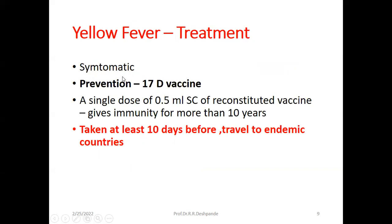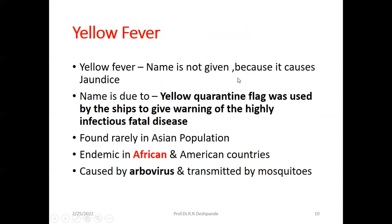Treatment is symptomatic. For prevention, the 17D vaccine is given — a single dose of 0.5 ml subcutaneous of reconstituted vaccine provides immunity for more than 10 years. This injection should be taken at least 10 days before travel to endemic countries. Regarding the name: yellow fever is not named because it causes jaundice. The name comes from the yellow quarantine flag used by ships to warn of this highly infectious and fatal disease — so the name is based on the flag color, not jaundice.